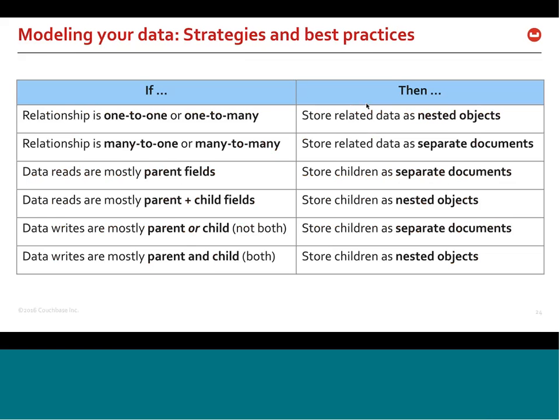The question becomes: which do you choose? Here's a simple cheat sheet. If most of your reads are only on parent fields and you never need the children, store the children as separate documents — retrieving the parent without fetching the children is a very efficient operation. However, if your application always gets both the parent and the children — every time you get a blog entry you also get all the comments — then it's better to store them as a single nested object so you can get everything in one retrieval.